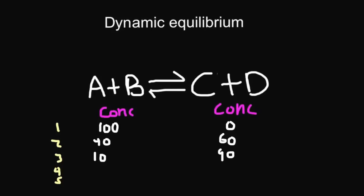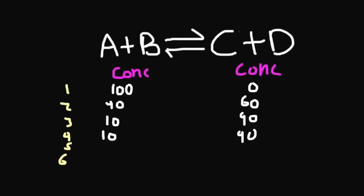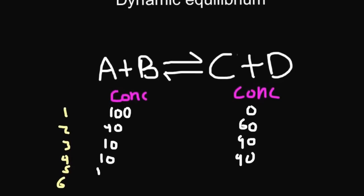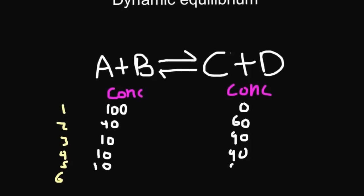Now, the reaction is still going on — still going on in the forward direction, A plus B going to C plus D, and also still going on in the backward direction. But now that I've reached dynamic equilibrium, at minute 4 we still have 10 moles per decimetre cubed of A and 90 moles per decimetre cubed of C. We leave it for another minute, and at 5 minutes again 10 of A, 90 of C.